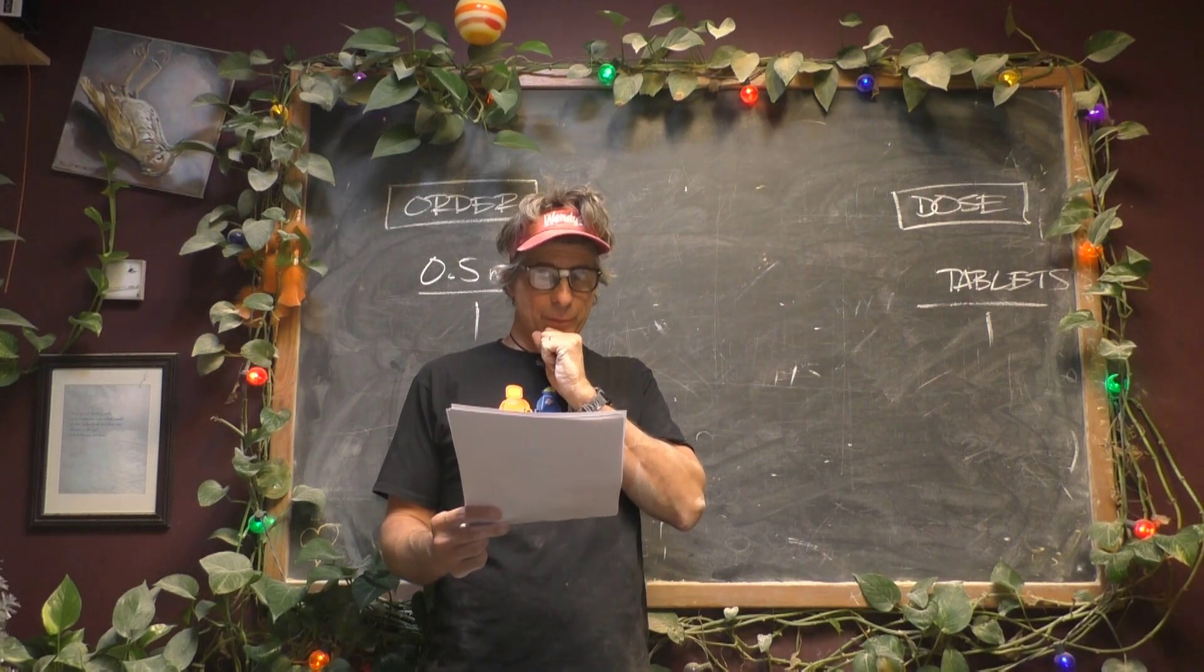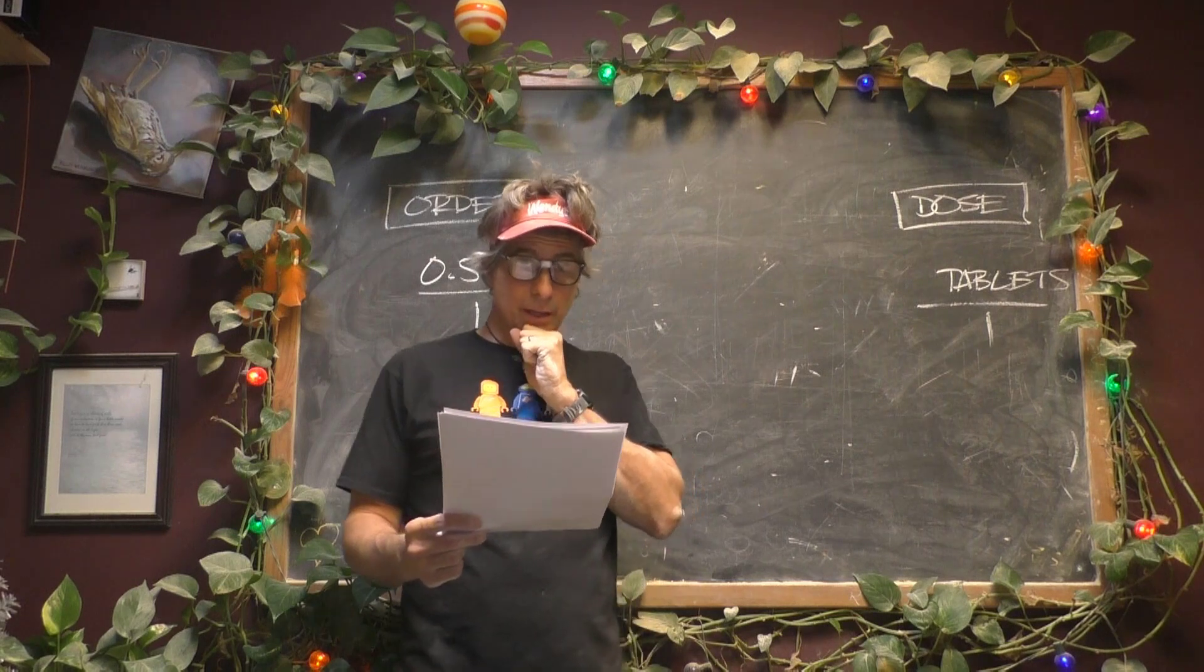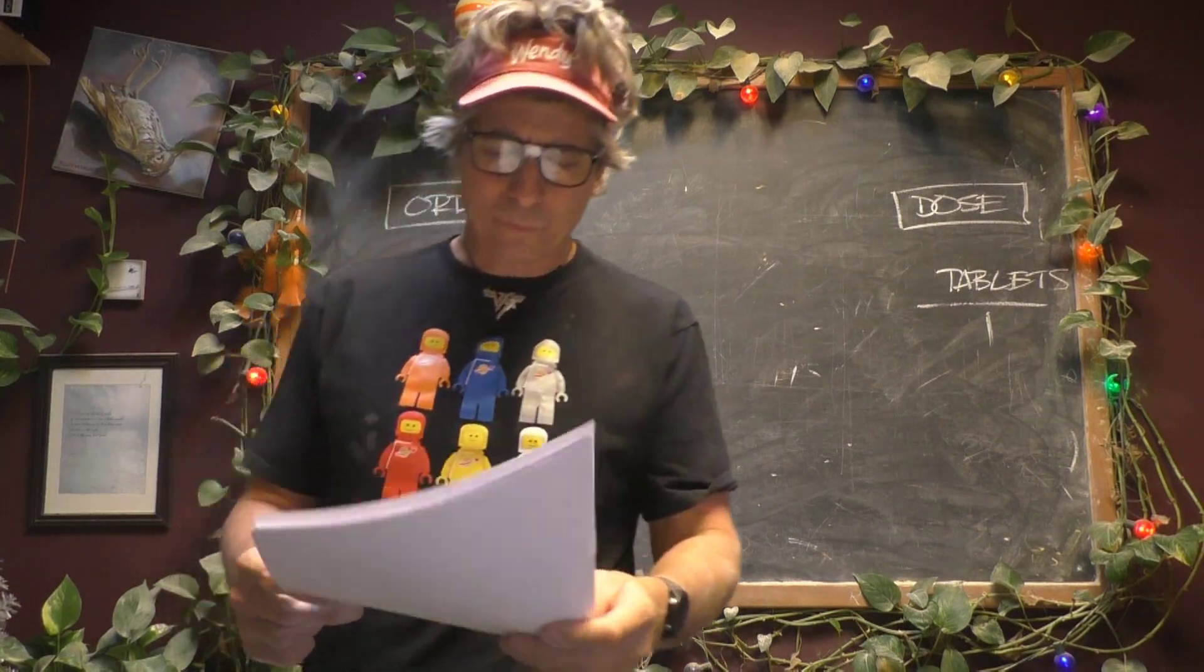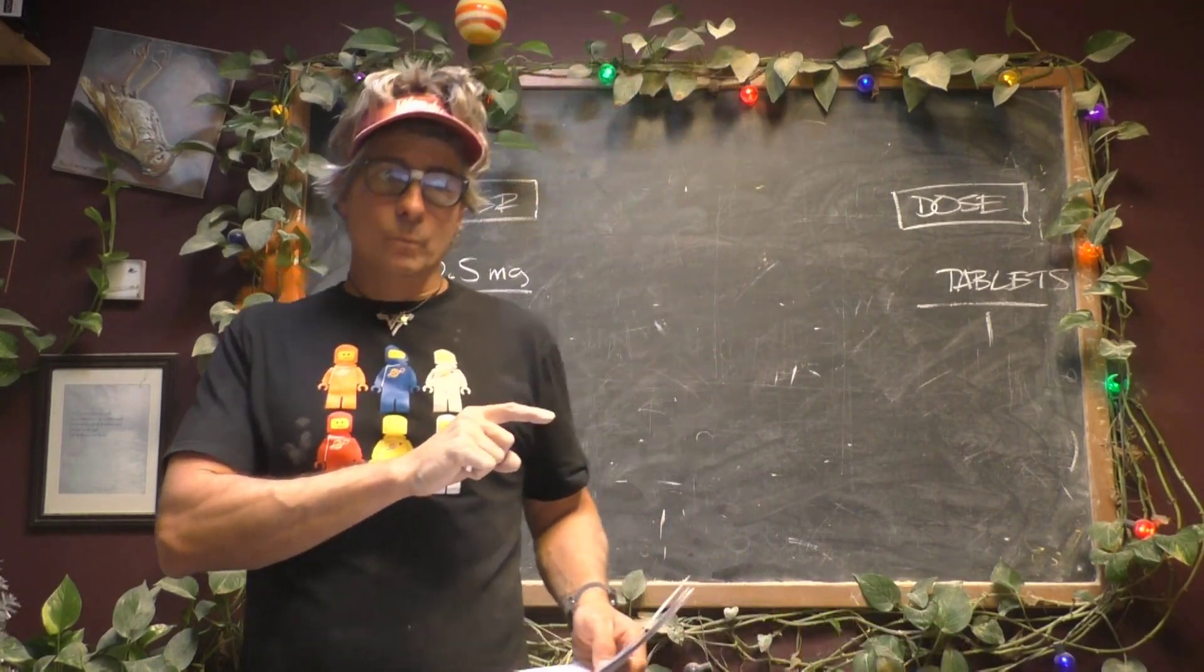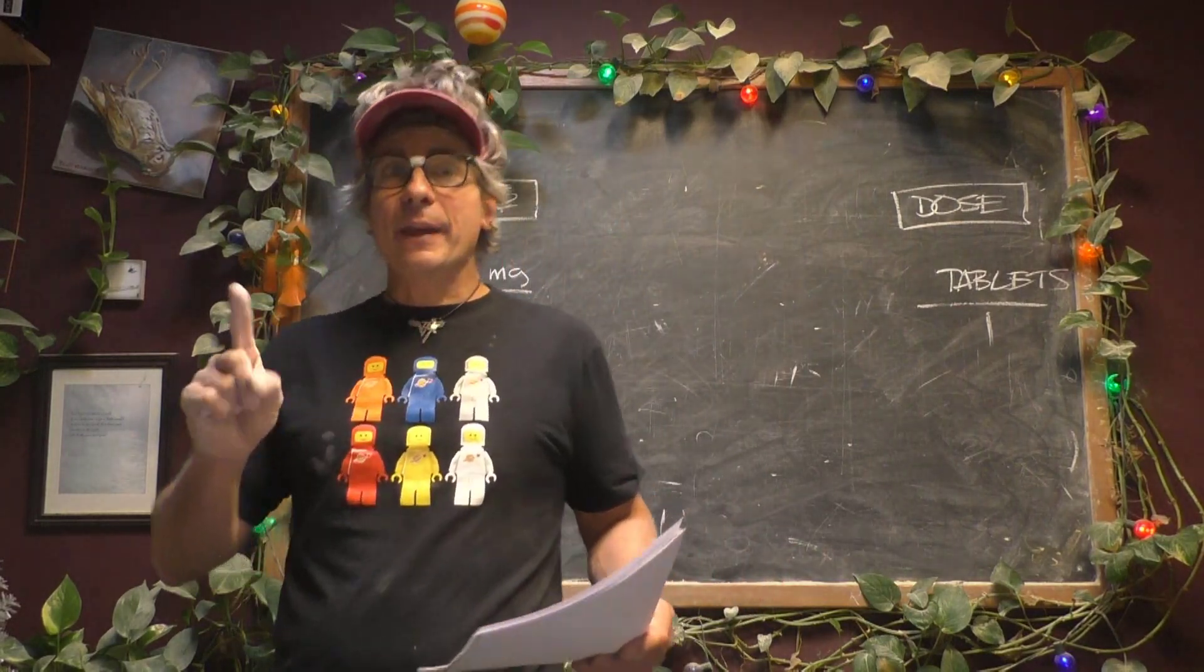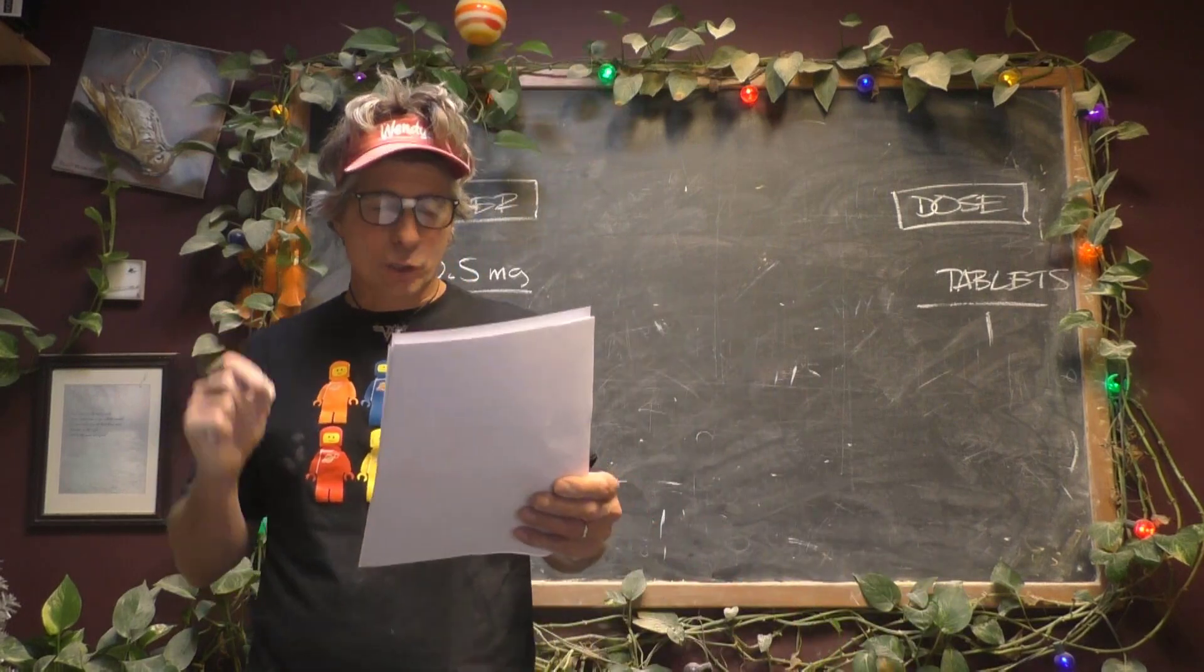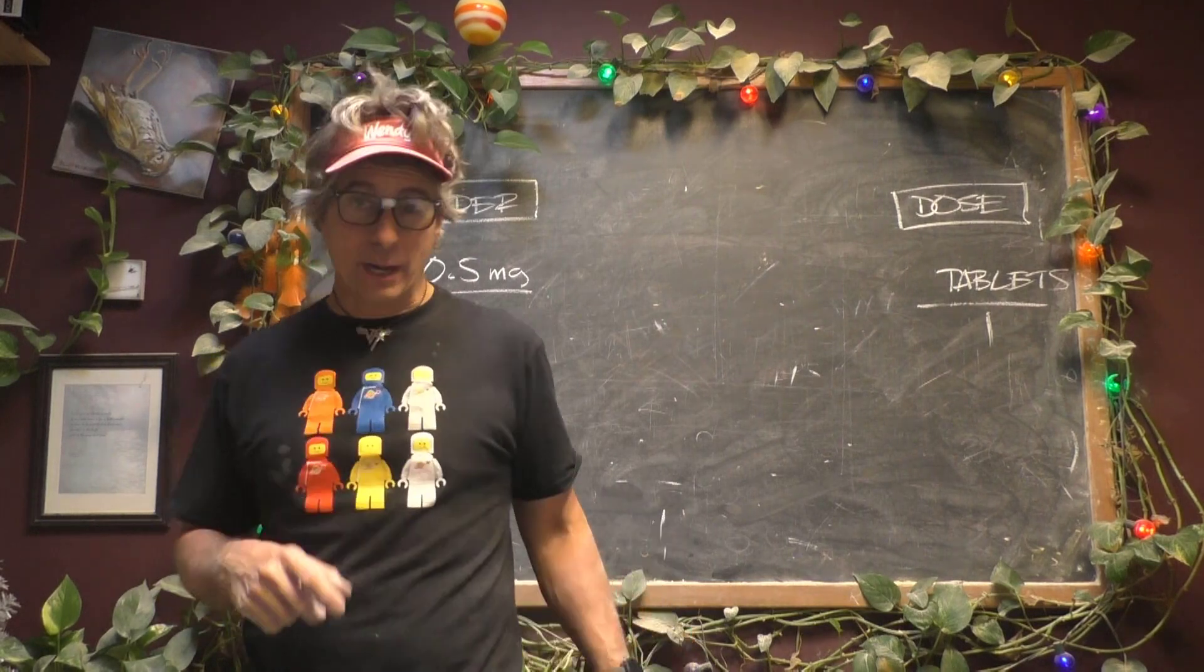Decadron, half a milligram, three times a day. If that's true, that means they're going to get 0.5, let's say at midnight, then 0.5 eight hours later, and then 0.5 eight hours after that. So that's 1.5 total milligrams of Decadron.